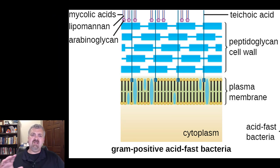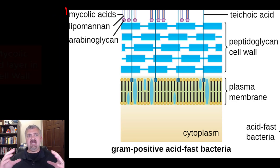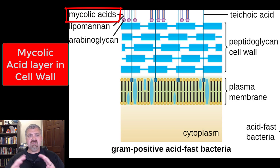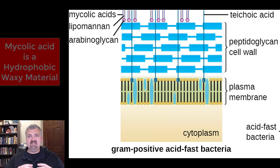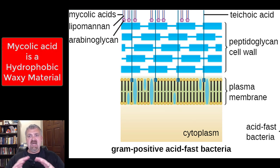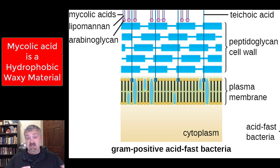What you see here — and this picture doesn't do it justice — is mycolic acid. Up to 60% of the cell membrane surrounding acid-fast bacteria is going to be mycolic acid. It is a waxy, hydrophobic, water-fearing covering that surrounds this organism. That's why it doesn't stain with the gram stain.